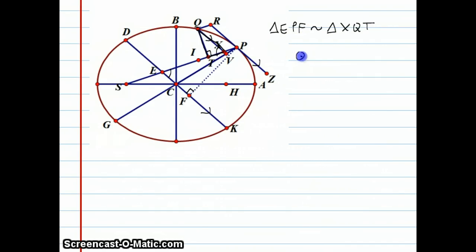So, for instance, I can say that QX, which is the hypotenuse of the smaller triangle, over QT, which is across from that smaller angle, is equal to EP over PF.